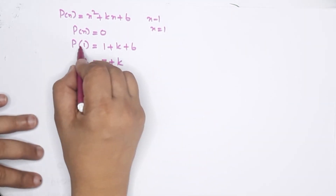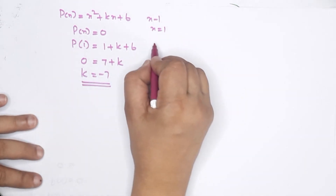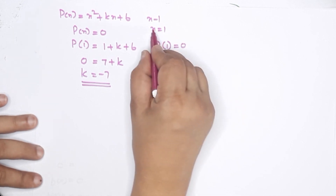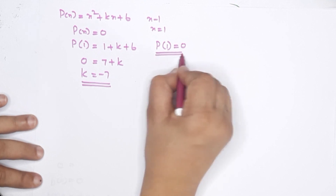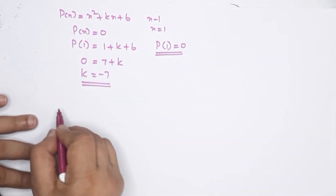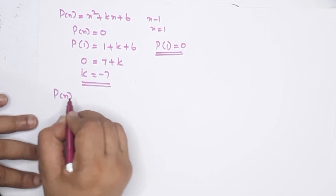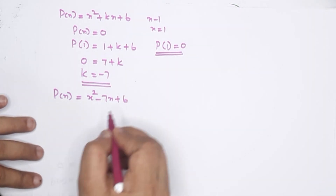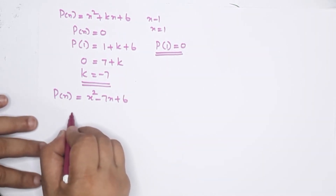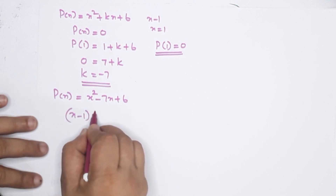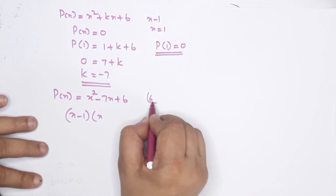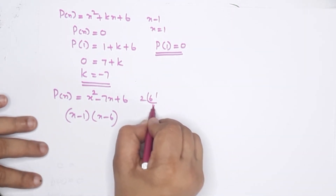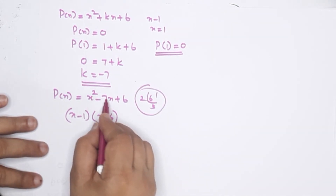So P of x is equal to x squared minus 7x plus 6. This polynomial has x minus 1 as a factor. The factors of 6 are: 6 and 1, or 2 and 3. We need two numbers that multiply to 6 and add to 7. Those are 6 and 1, so the other factor is x minus 6.